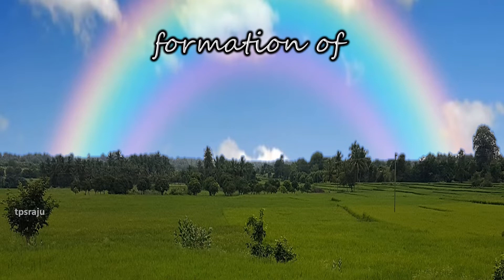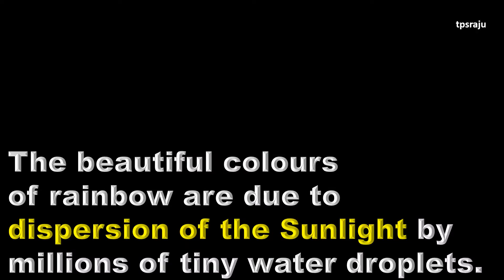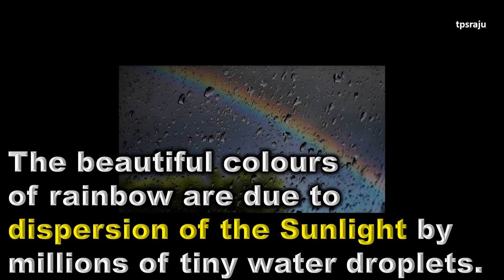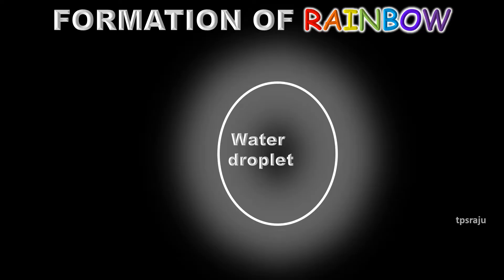Now, we are going to learn about formation of rainbow. The beautiful colors of rainbow are due to dispersion of sunlight by millions of tiny water droplets. Let us observe carefully what will happen when sunlight strikes a water droplet.